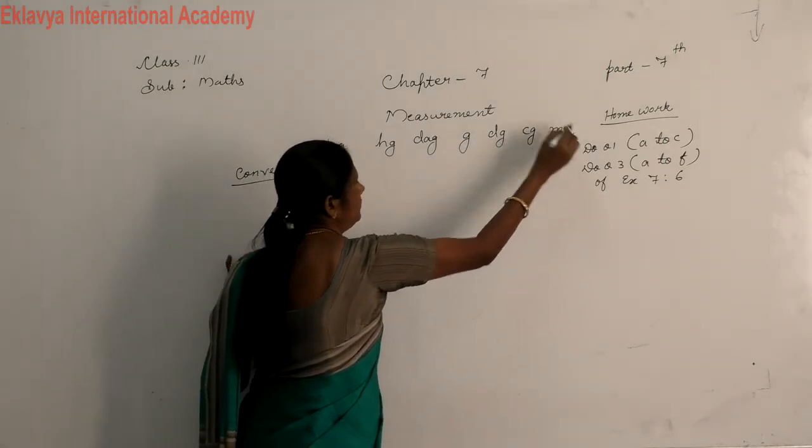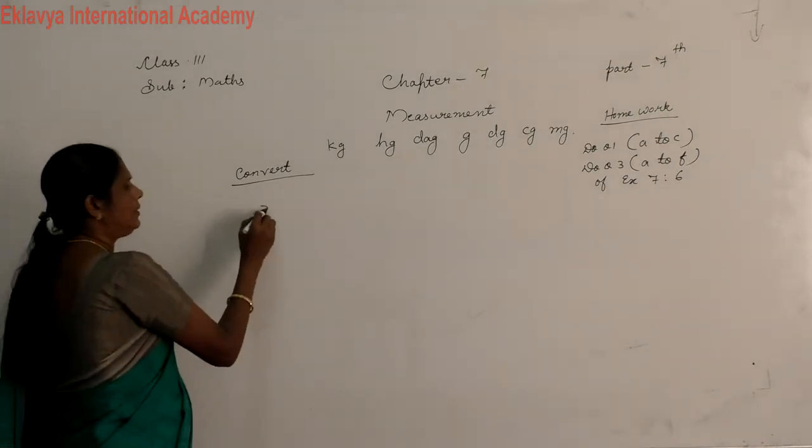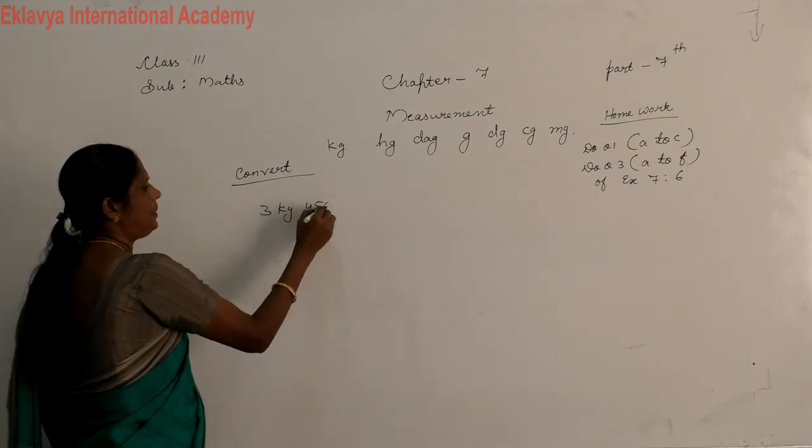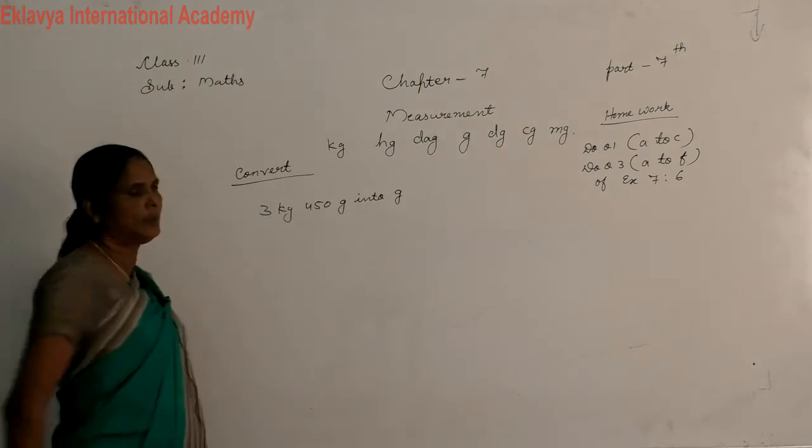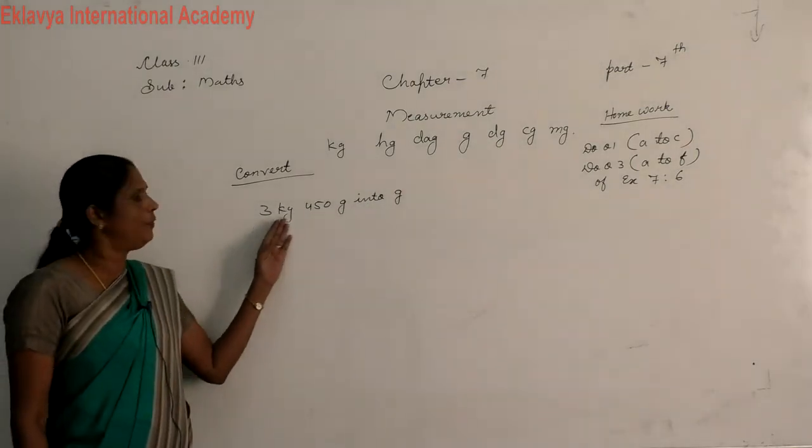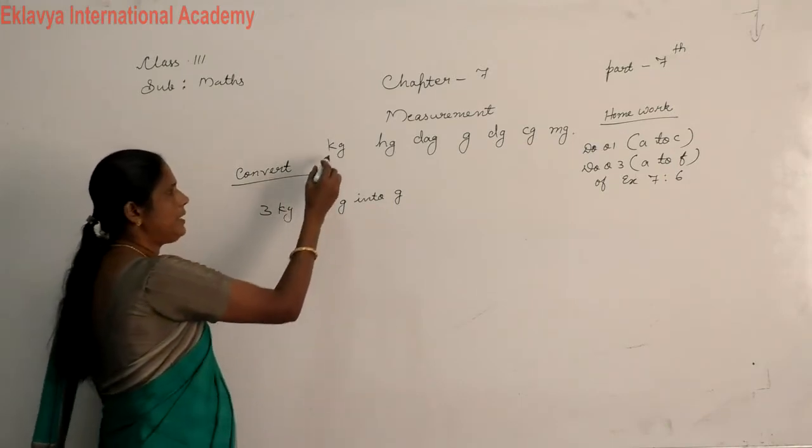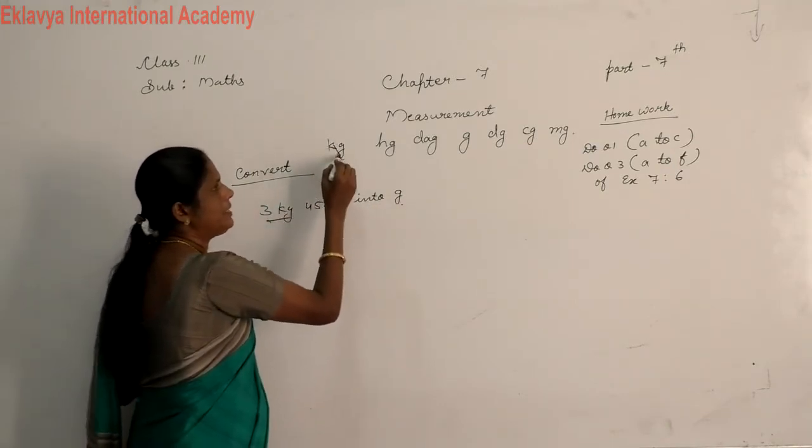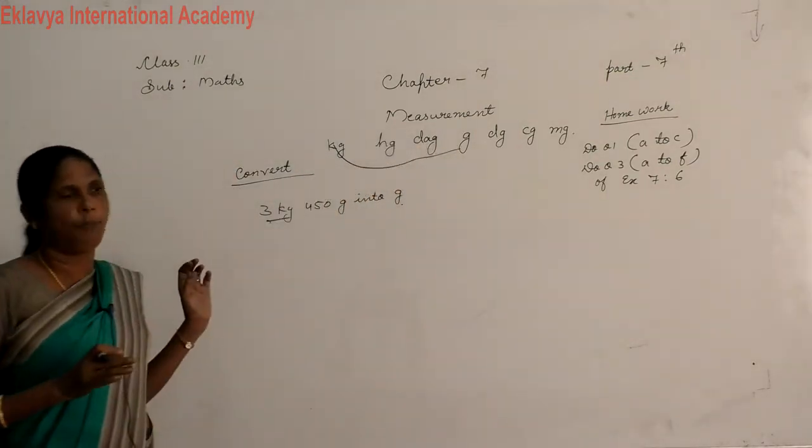Then we convert 3 kg 450 gram into gram. Where is our kg? This is kg into gram. Kg here, gram here. Bigger to smaller, we multiply.